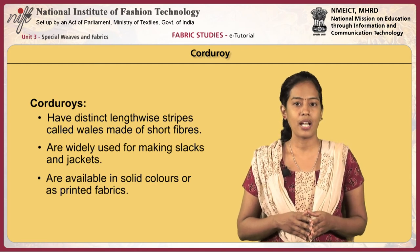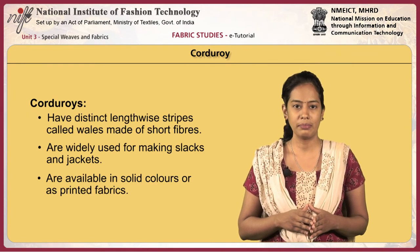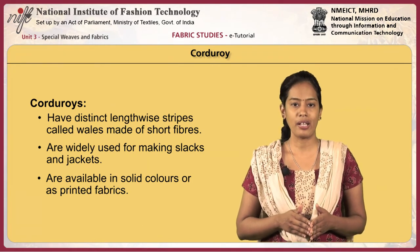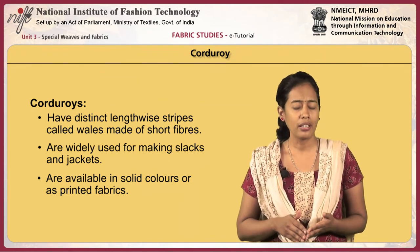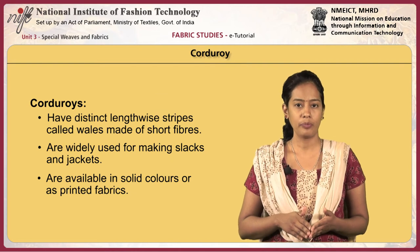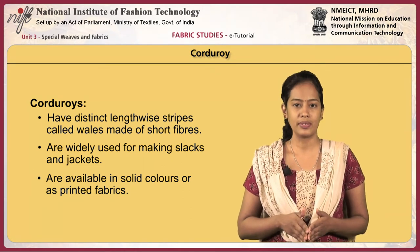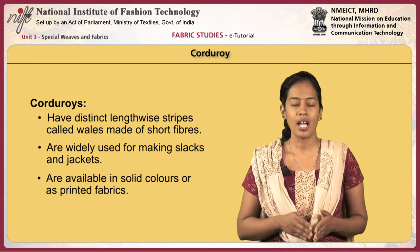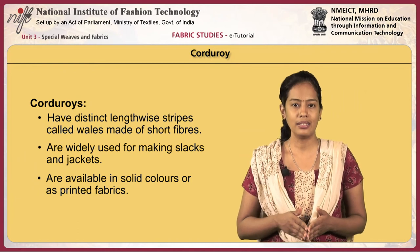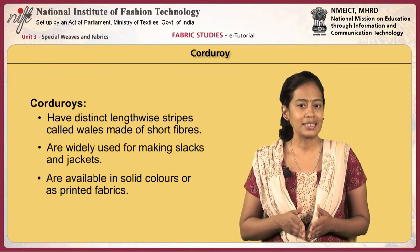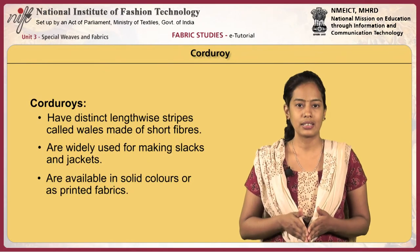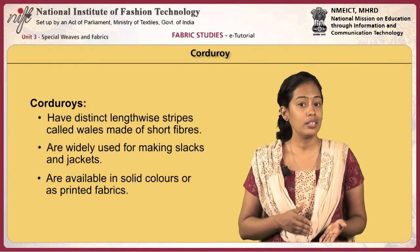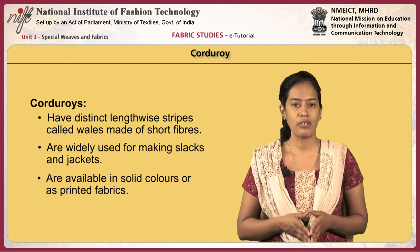Corduroys have distinct lengthwise stripes called wales, made of short fibers. The base fabric may be made of plain or twill weaves. Corduroy fabrics made of twill weave have denser piles. They are widely used for making slacks and jackets. Corduroys are available in solid colors or as printed fabrics.